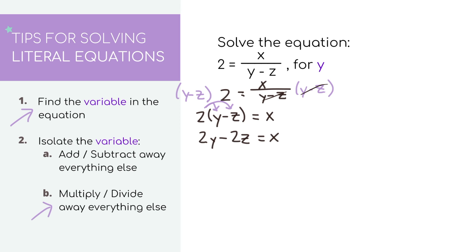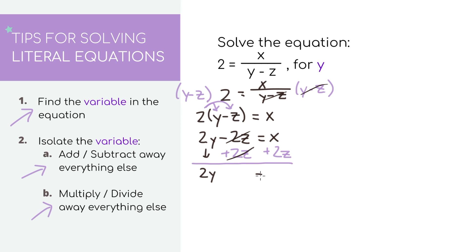This is looking easier now. Since we want to isolate y, let's get rid of the negative 2z by doing the opposite and adding 2z to both sides. We'll get 2y equals x plus 2z. We can't combine anything because they aren't like terms — they don't have the same variable. But that's okay because our goal is just to isolate y. To get rid of the 2 in front of y, we divide by 2 on both sides. Now we're left with y equals x plus 2z over 2. And that's our answer.